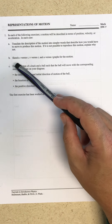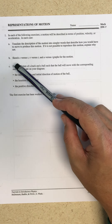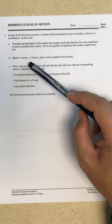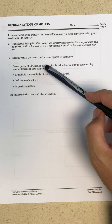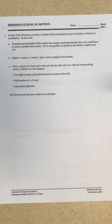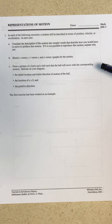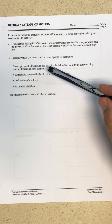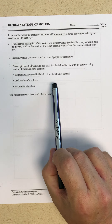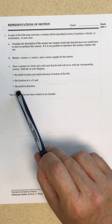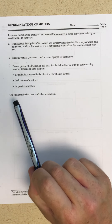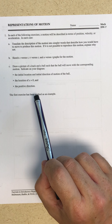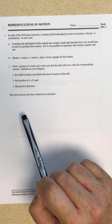We're going to make sketches of position versus time (x vs. t), velocity versus time (v vs. t), and acceleration versus time (a vs. t). I'm going to draw a picture of a track and a ball such that the ball will move with a corresponding motion. Indicate on your diagram the initial location and initial direction of motion of the ball, the location of the origin (x equals zero) — we're just talking about one-dimensional motion — and what direction the x-coordinate increases in, so the positive direction.